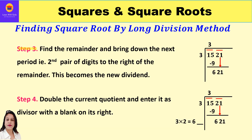Step 3 says: find the remainder and bring down the next period to the right of the remainder. Here, 15 minus 9 is 6. The next period is 21, which we bring down and write to the right of the remainder. So the new dividend is 621.